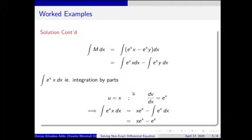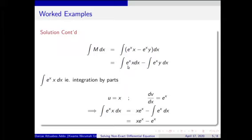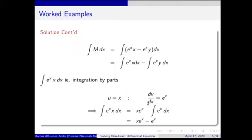Since the equation is exact, we integrate M with respect to x. The first part of the integral is a product of an exponential function and a linear function. To handle the product of two functions, we use integration by parts. We choose a favorable u and dv, where dv equals e^x, then proceed to solve.